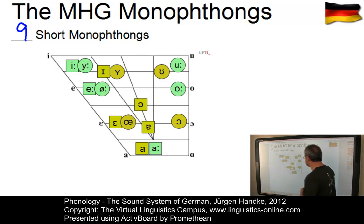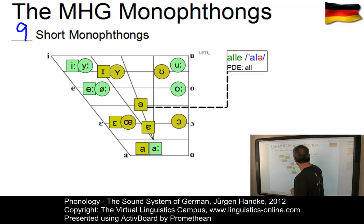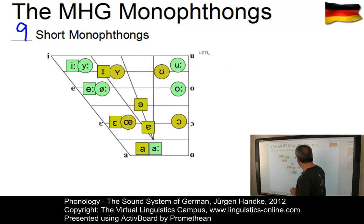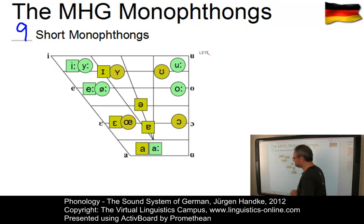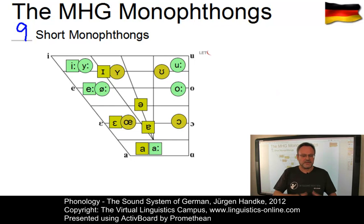Last but not least there are two central vowels: the schwa in unstressed position, as in alle, and a low central vowel as in words such as besser. So much for the monophthongs.